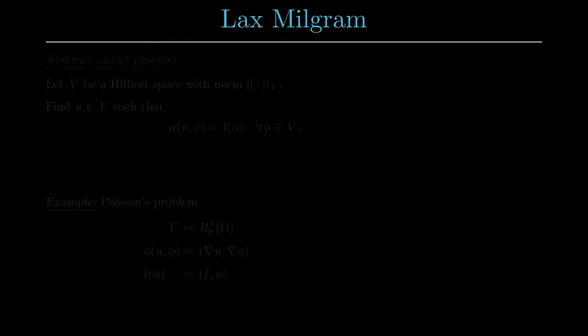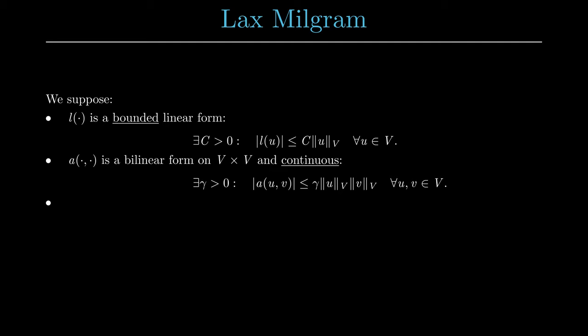Next, we assume that our variational formulation of our PDE satisfies three properties. First, the right-hand side functional should be bounded. Second, the bilinear form should be continuous. Third, the bilinear form should also be coercive. When applying the Lax-Milgram lemma later in this video, we will need to check whether these assumptions are fulfilled and then we get the existence of a unique solution to the PDE.